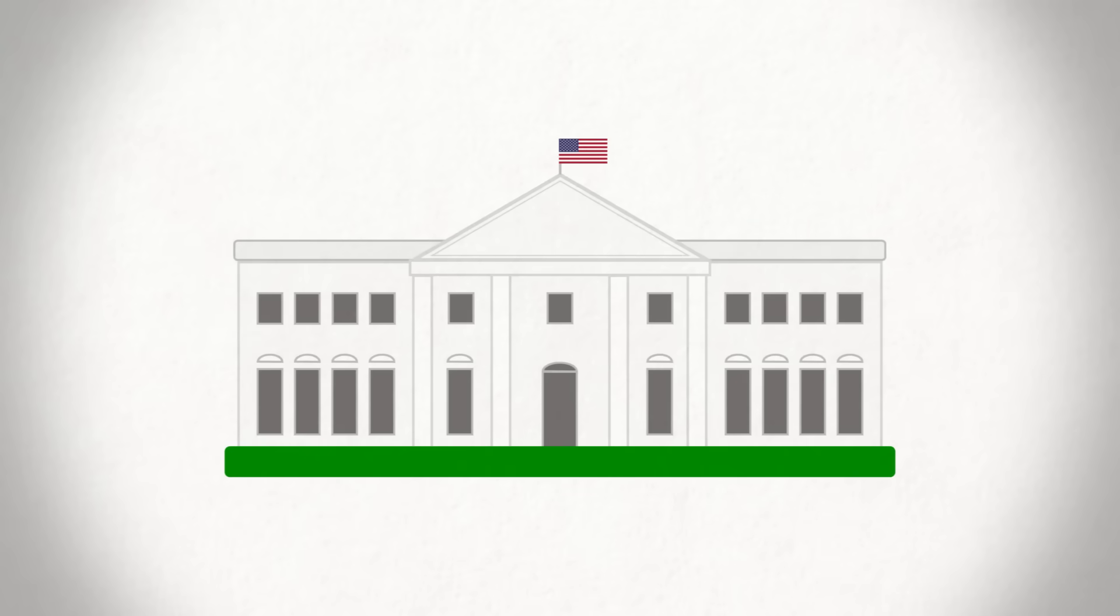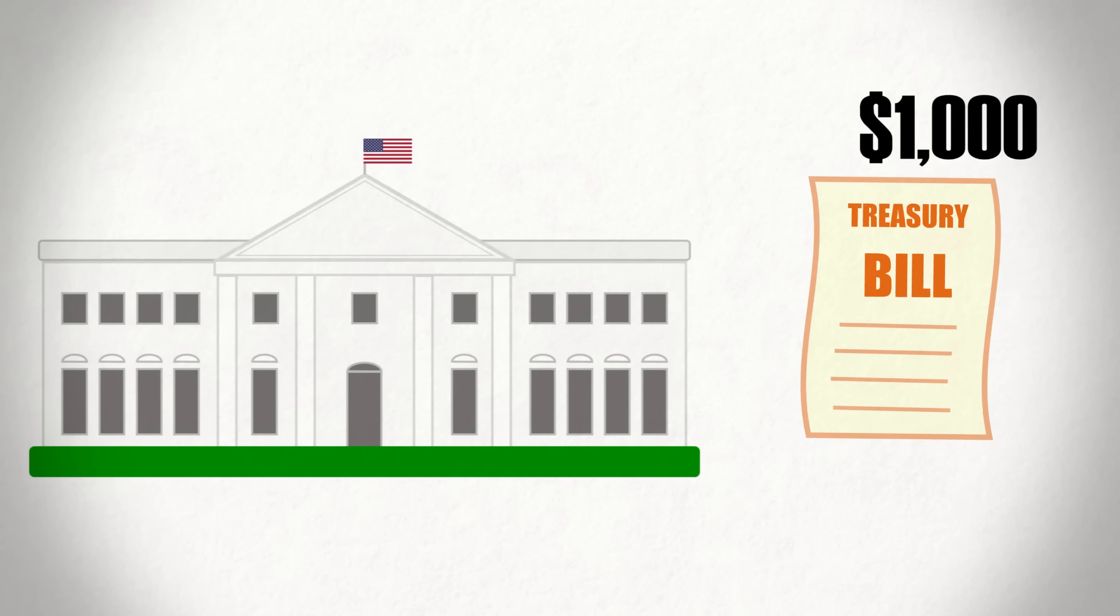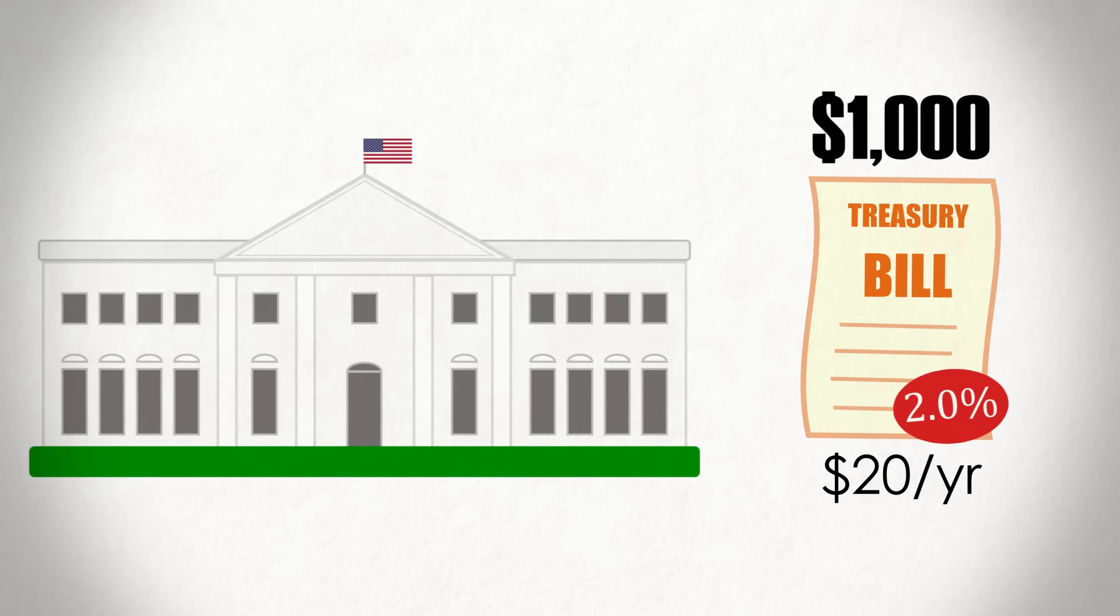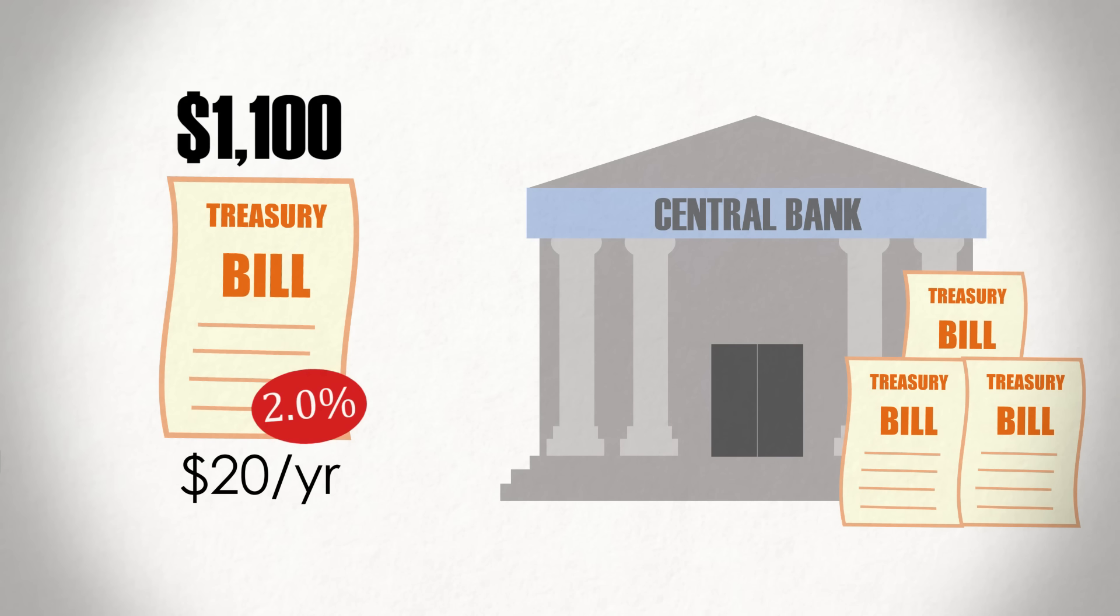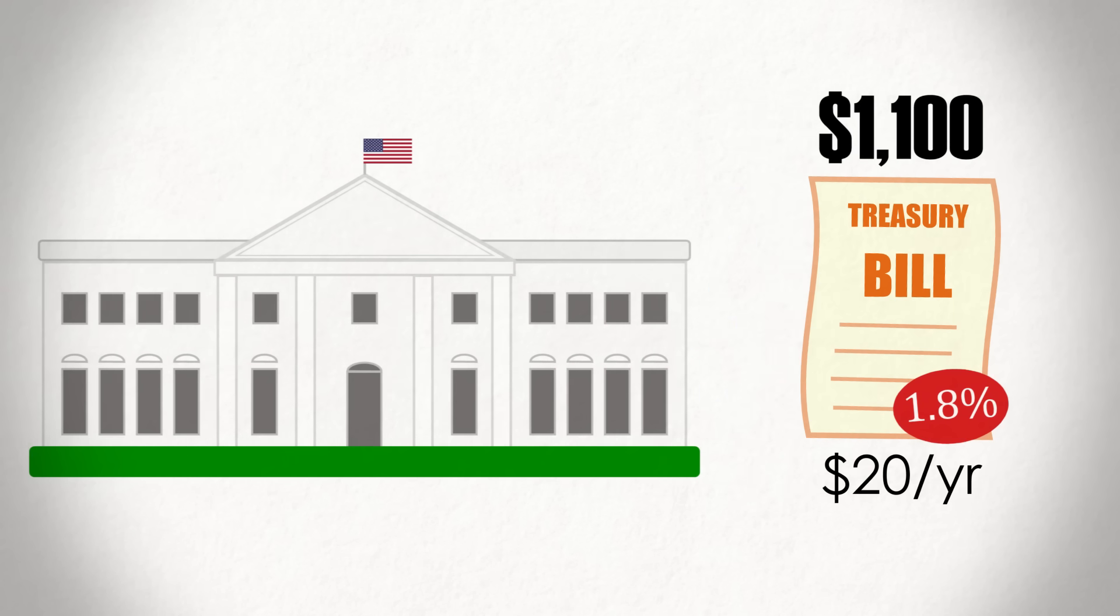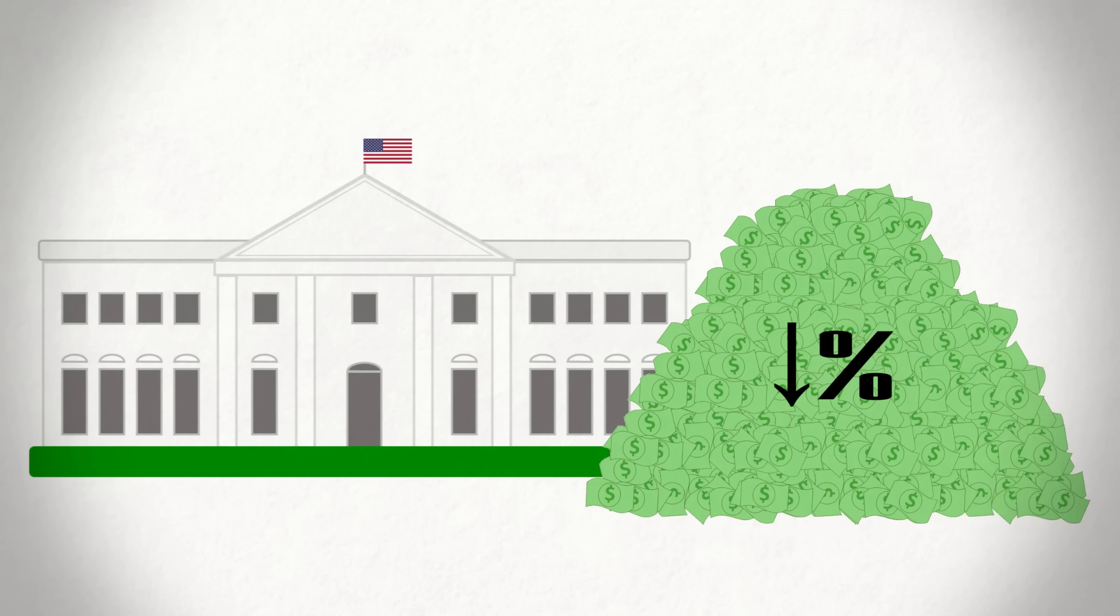For one, it can make it easier for the government to borrow money moving forward. For example, imagine the government has issued $1,000 treasury bills that pay $20 annually, so a 2% annual interest rate. And the central bank has bid up the price of outstanding treasury bills to $1,100, so they now only offer a yield of 1.8% to new investors. Because outstanding treasury bills only offer a 1.8% return to investors, the government could issue future treasury bills that pay, say, $18 annually and still offer a competitive rate, lowering their own cost of borrowing and allowing them to spend more.